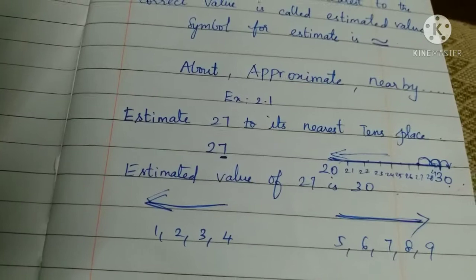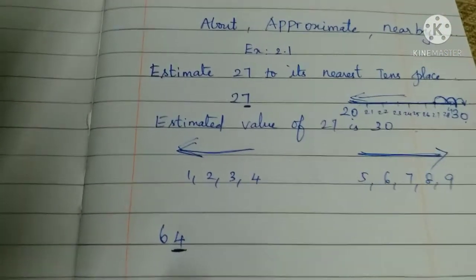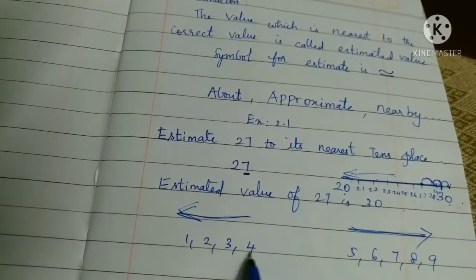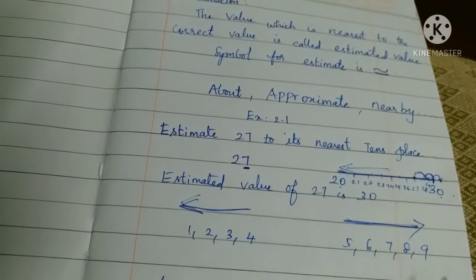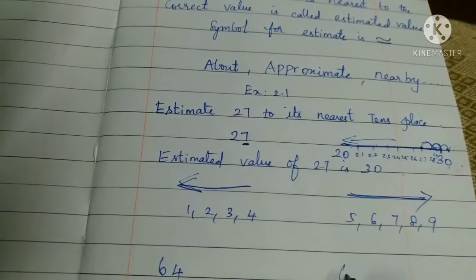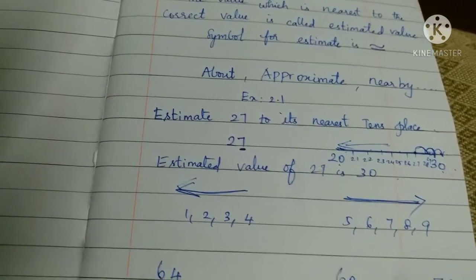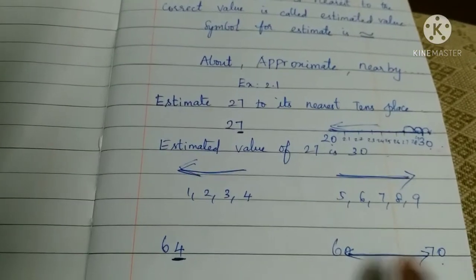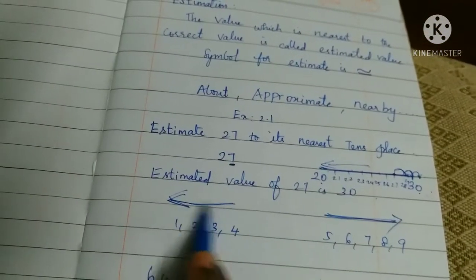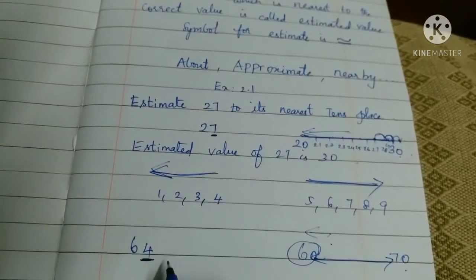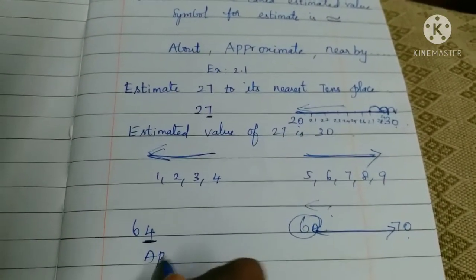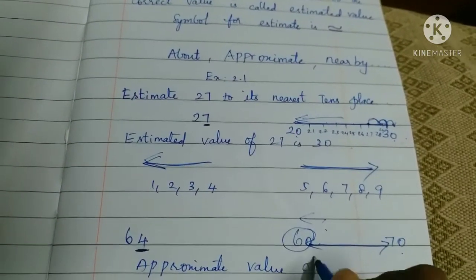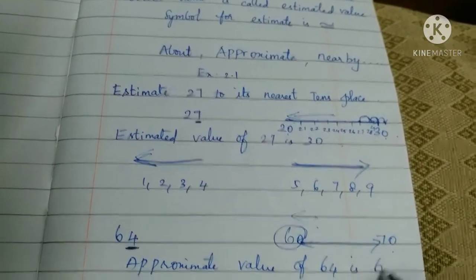For 64, we look at the units place — it is 4. The rule says if it is 4, we go backward. The range of 64 is 60 to 70. Since the units digit is 4, we round down. So the approximate value of 64 is 60.